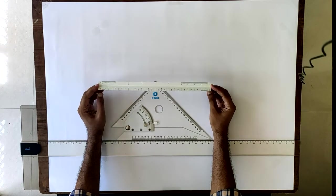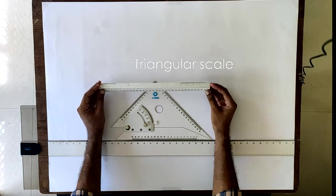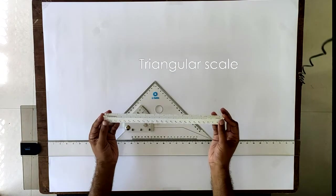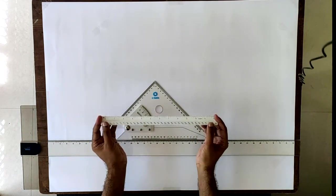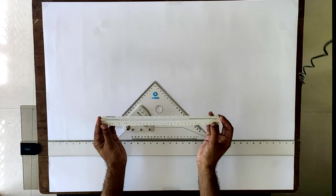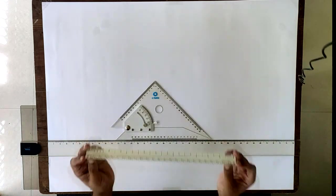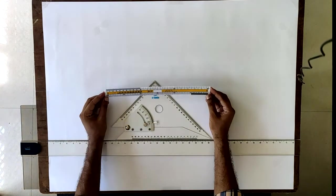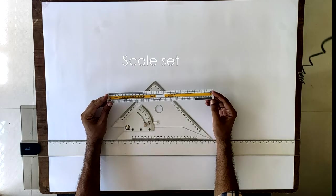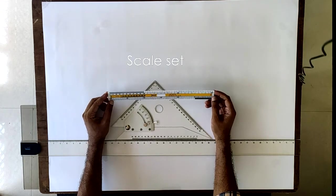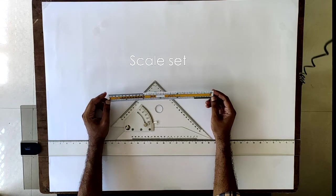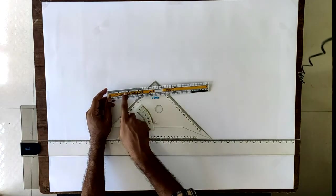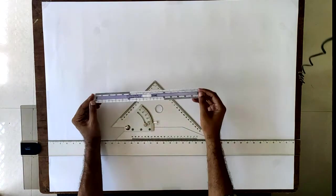This is one of the scale sets that we use and it is known as the triangular scale. All these edges have different markings and readings on them. Another type of scale that we use is this. It's almost similar to the 30 centimeter scales that you have been using in school, but if you notice there are readings on both sides and they are not the same.